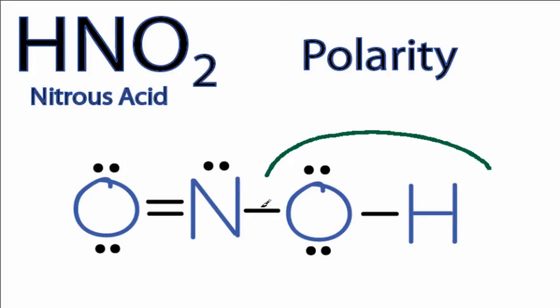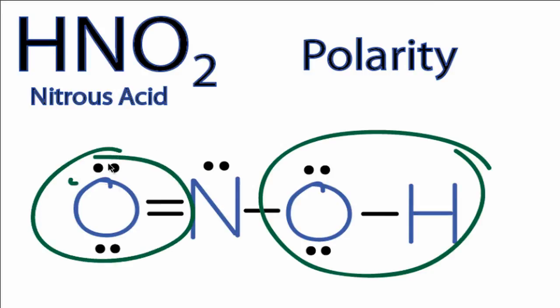We have the OH over on this side here, and then we have a double bonded oxygen on this side. Since the HNO2 molecule isn't symmetrical, we're thinking that it might be a polar molecule.